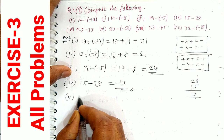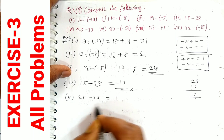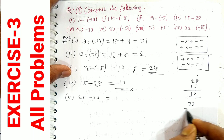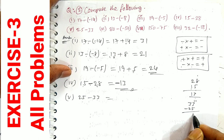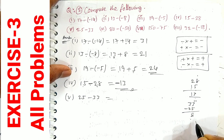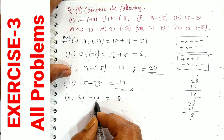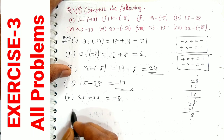Fifth one: 25 minus 33. Since 33 is bigger, we compute 33 minus 25. Carry over: 13 minus 5 is 8, 2 minus 2 is 0 — giving 8. Since the bigger number is negative, the answer is minus 8.